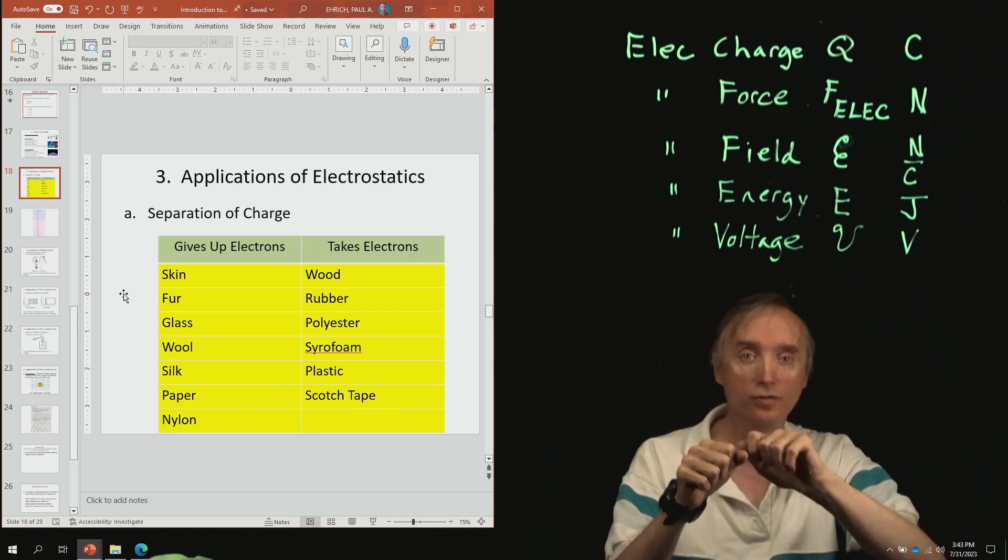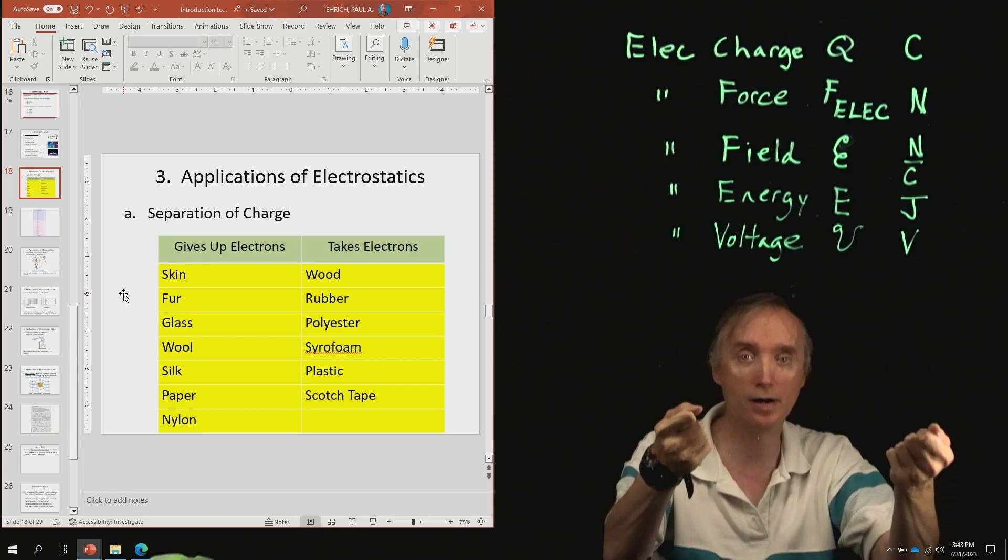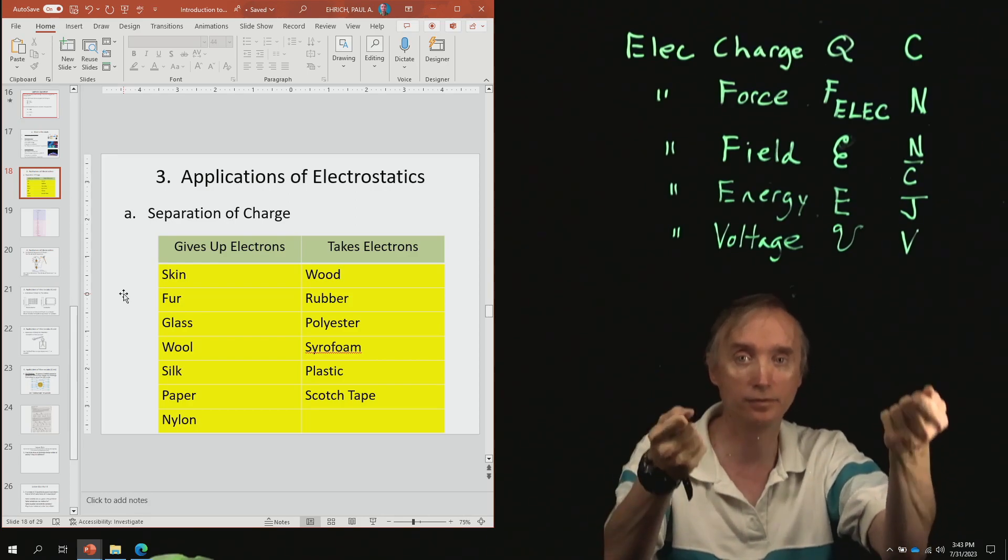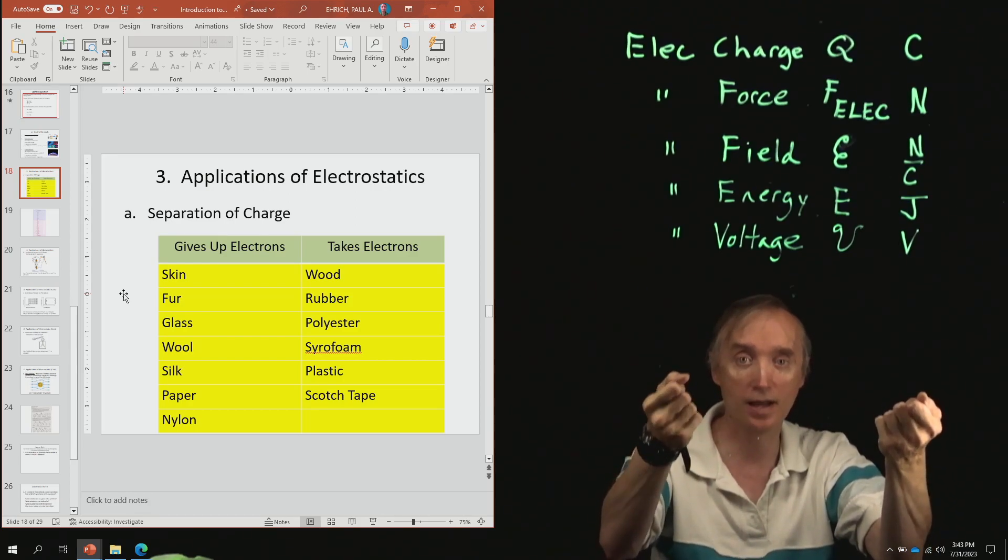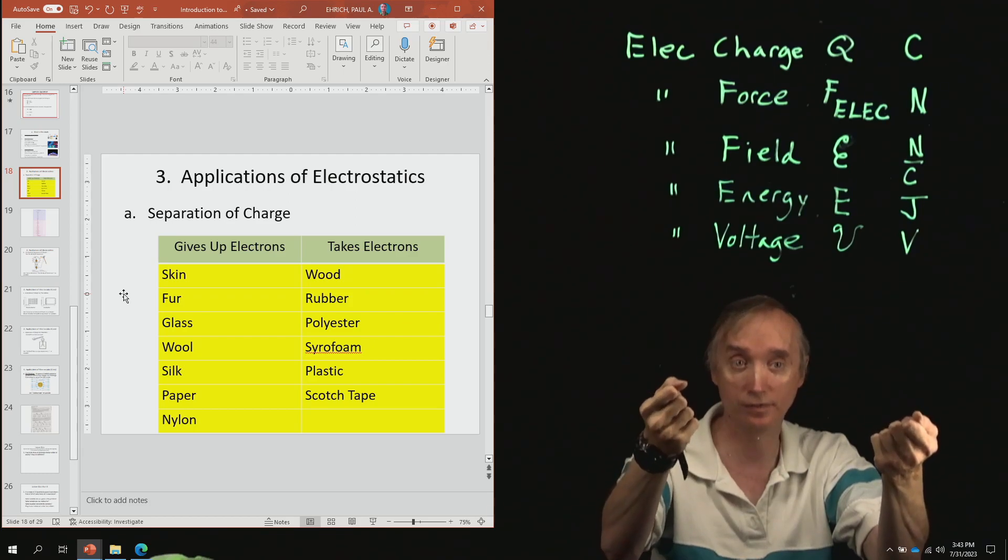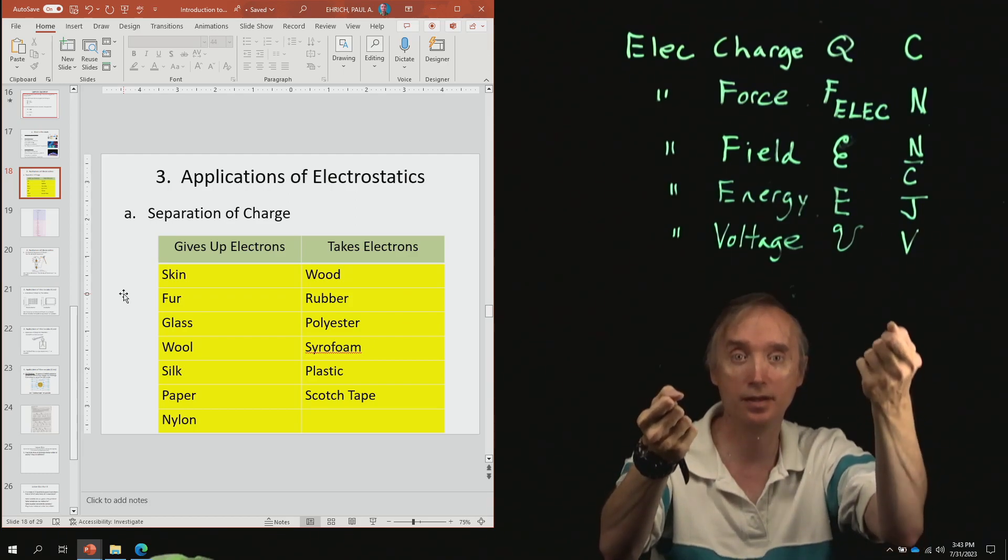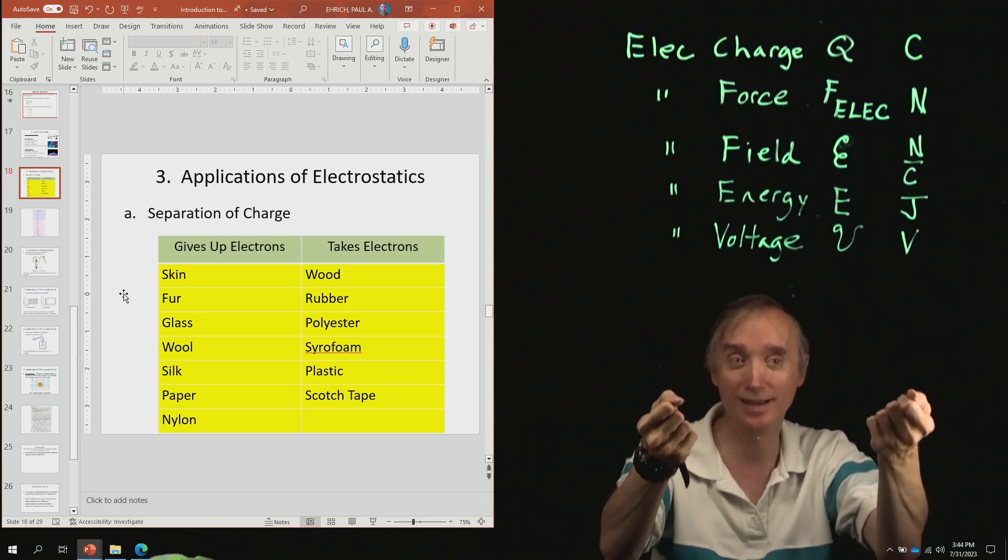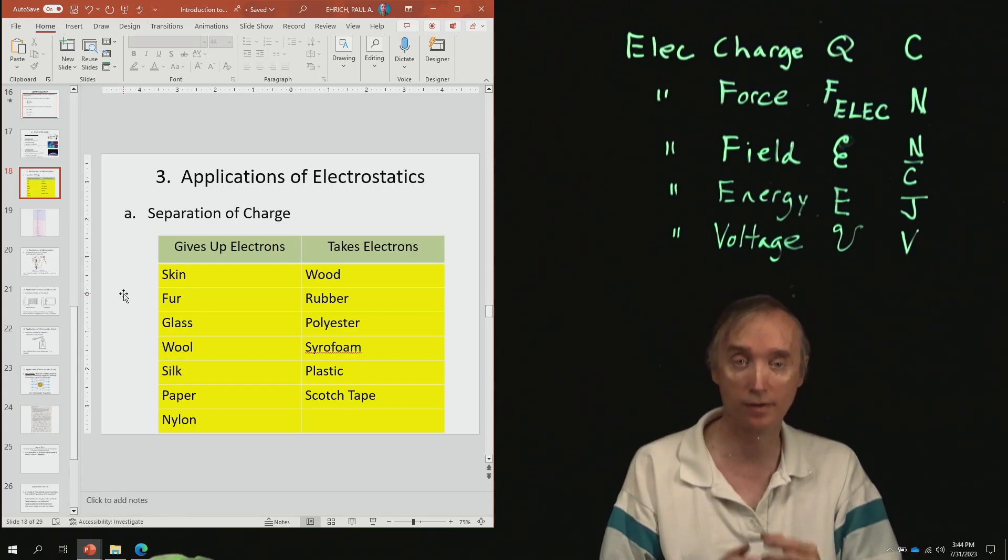Once you've rubbed it, which one's going to be positive and which one's going to be negative? The glass is going to be positively charged now, and then the rubber is going to be negatively charged. So we have separated the electrical charges. We have not created them, but we have separated them.